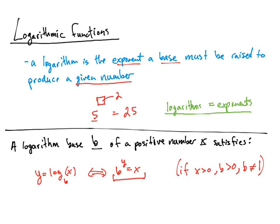Looking at the first equation: b to the y power is equal to x, which we can write as the logarithmic equation y equals log base b of x. The exponent becomes the value that the logarithmic expression equals. The base of the exponential equation becomes the base of the logarithm, and x goes inside the argument of the logarithm. In this video we'll be converting between these two forms and evaluating logarithmic expressions.